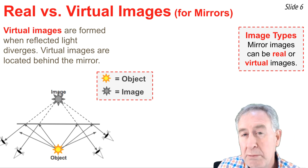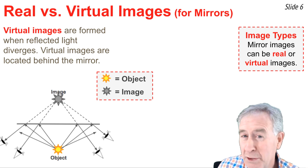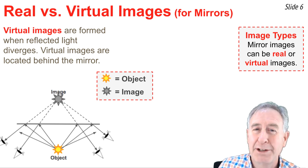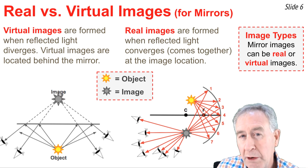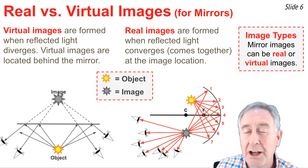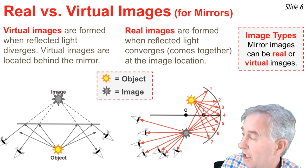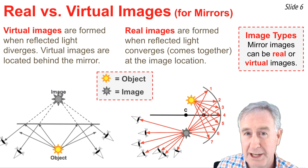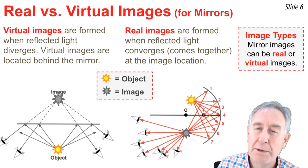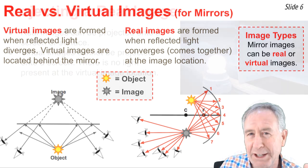Concave mirrors can produce both real and virtual images. We've seen two instances of real images produced by concave mirrors. Real images are formed whenever the reflected light converges or comes together to a point upon reflection. Observers sighting at the image location are sighting at a location on the object side of the mirror. Real images are formed when reflected light rays come together like this.